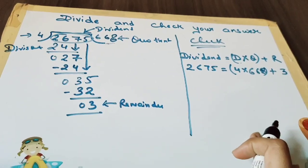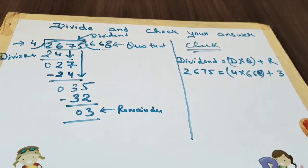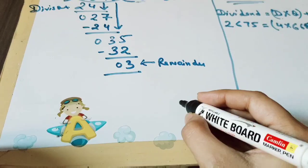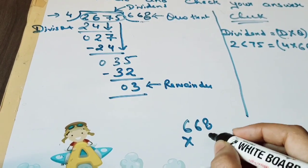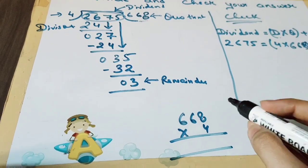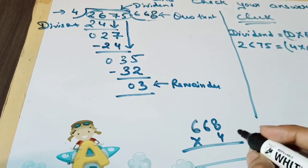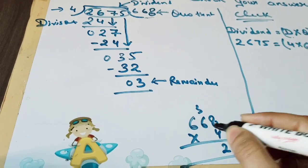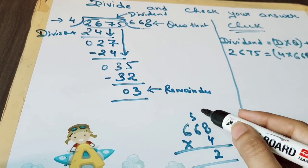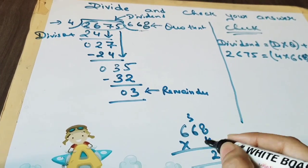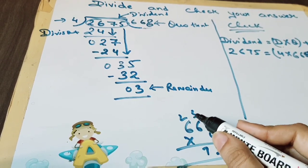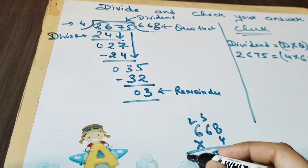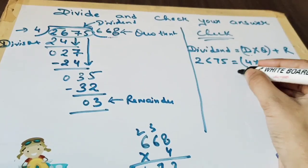So we can do here as a rough: 668 multiplied by 4. So 8 times 4 is 32, 6 times 4 is 24 plus 3 is 27. 4 times 6 is 24 plus 2 is 26. We got the number, so we will write here 2672.